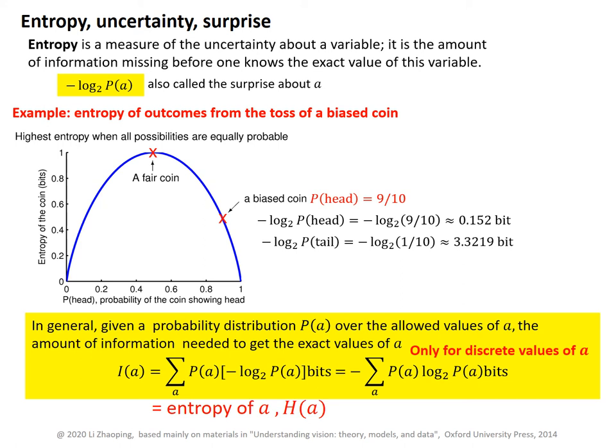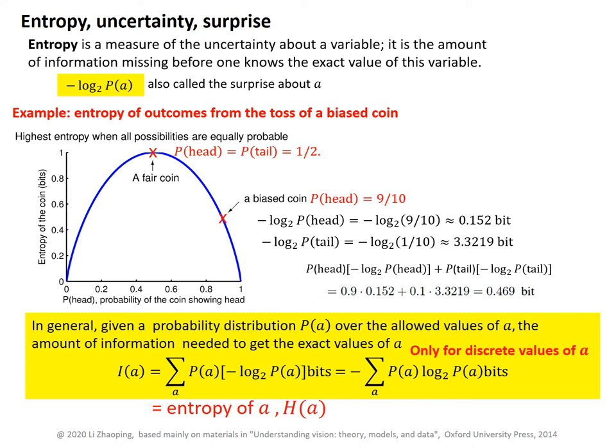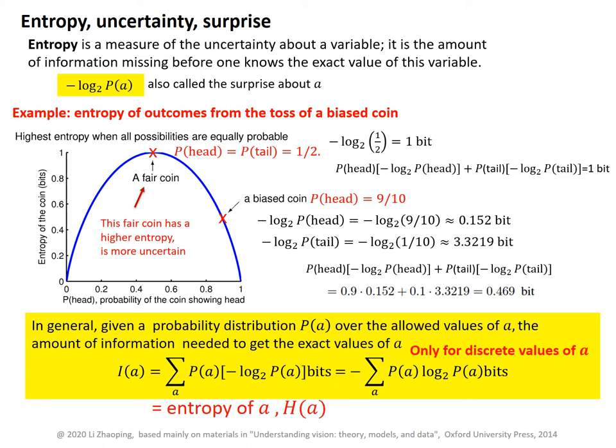Since the low surprise outcome happens 90% of the time and the high surprise outcome happens only 10% of the time, on average you get 0.469 bits of surprise from this biased coin. On the other hand, for the fair coin, each outcome has a 50% chance and its negative log base 2 is 1 bit. So on average, the amount of surprise or uncertainty is also 1 bit. We see that this fair coin has a higher entropy — we are most uncertain about the outcome for each coin toss.